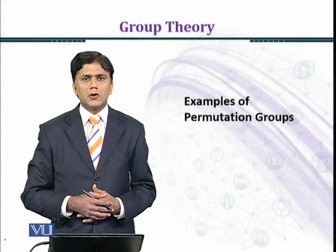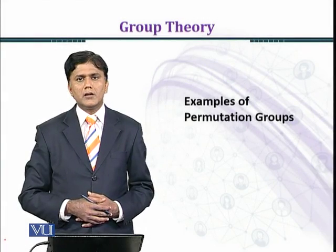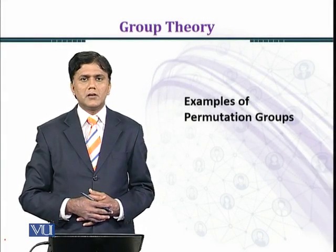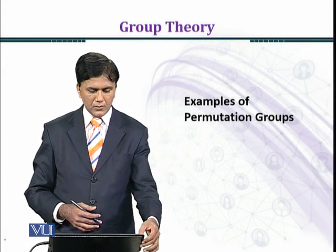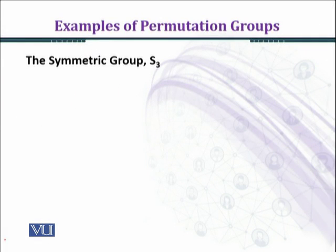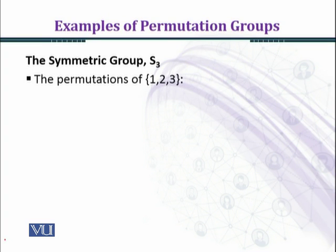In this module we shall discuss some examples of symmetric groups. The symmetric group S3 consists of the permutations of {1, 2, 3}. The first element is the identity permutation: 1 goes to 1, 2 goes to 2, 3 goes to 3.